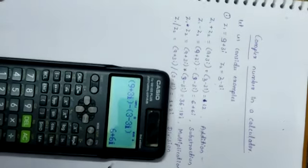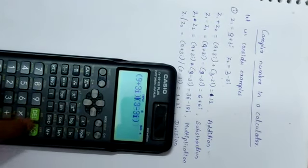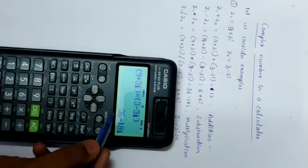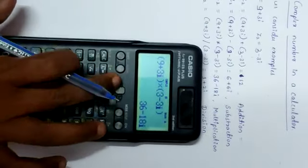Then we calculate multiplication of these two numbers. Replace the operation by multiplication, and we get 36 minus 18i as the multiplication of these two numbers.